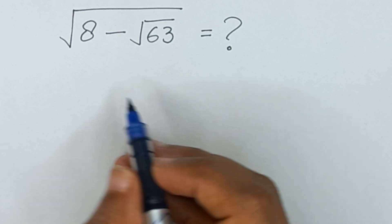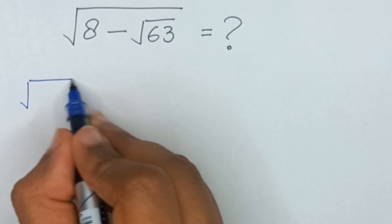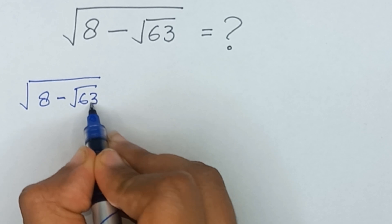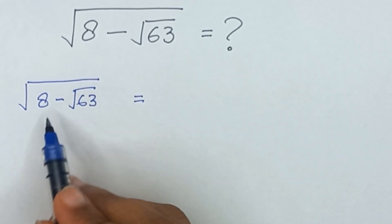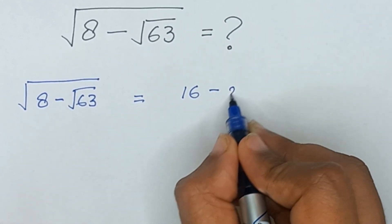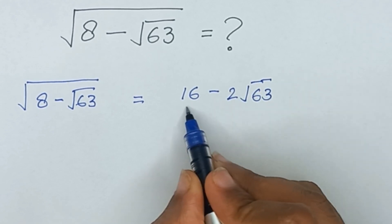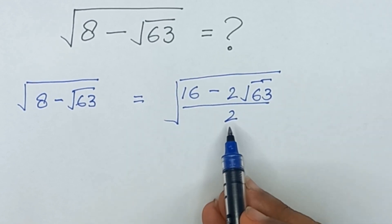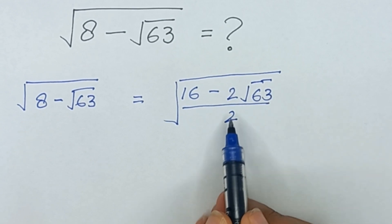Here we have square root of (8 minus square root of 63). We can write 8 minus square root of 63 as (16 minus 2 times square root of 63) divided by 2, because 16 divided by 2 will again become 8, and 2 times square root of 63 divided by 2 will again become square root of 63.